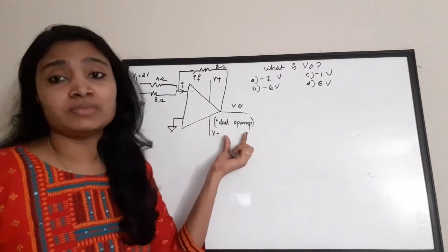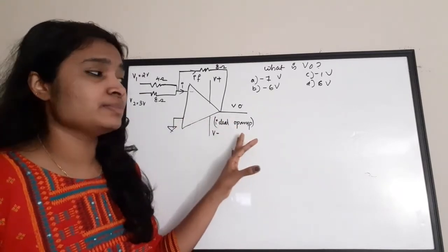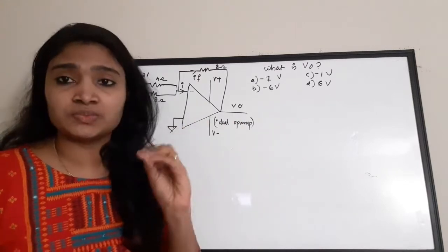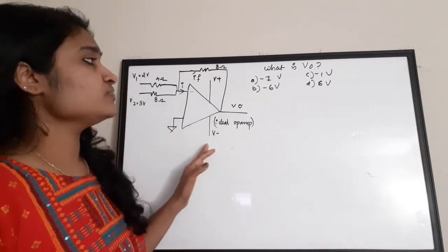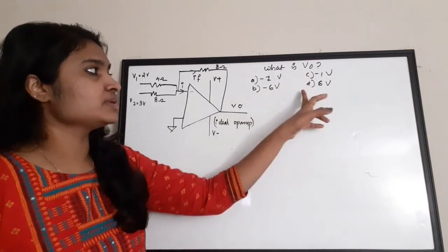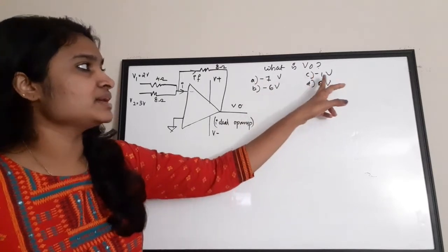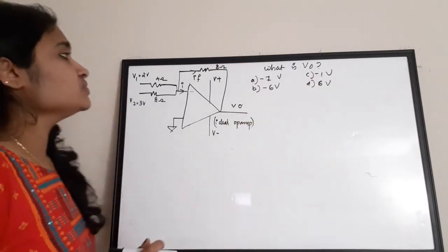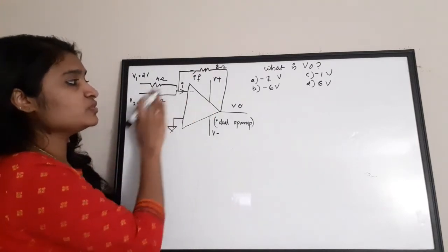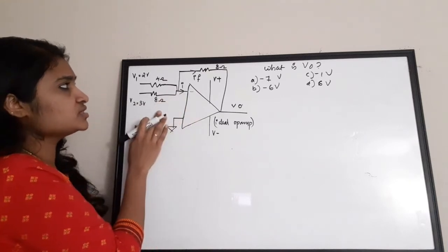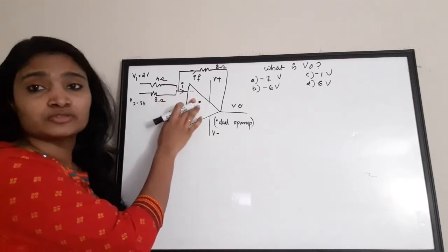We need to find the value of Vout from the options: (a) −7, (b) −6, (c) −1, (d) 6 volts. In this circuit, V1 and V2 are connected to the inverting terminal, so it is an inverting-type summing amplifier. There are two currents: the input current i to the inverting terminal and a feedback current If in the feedback loop.